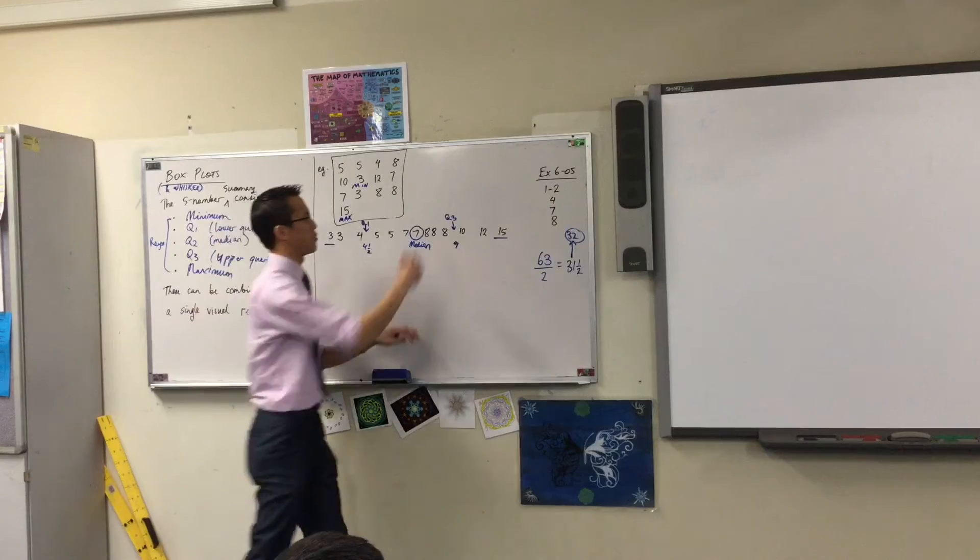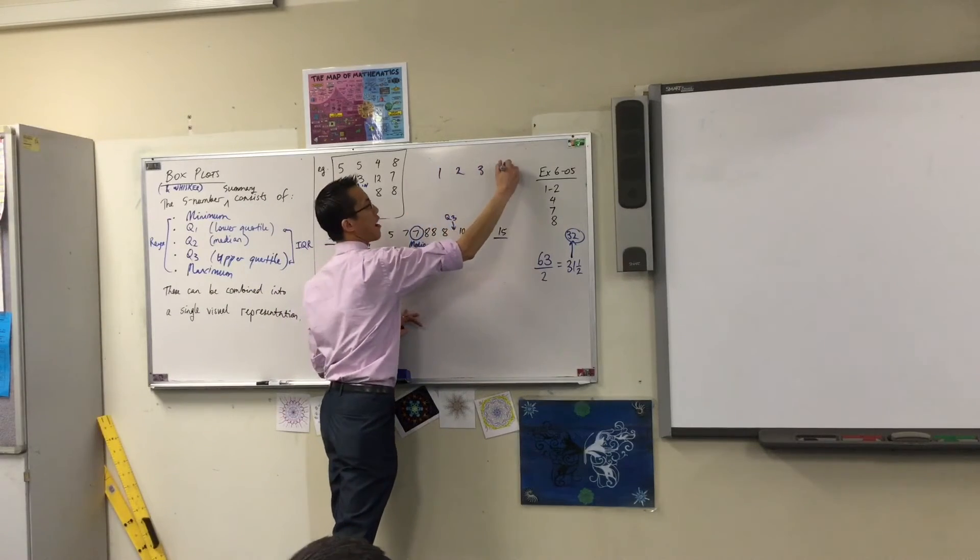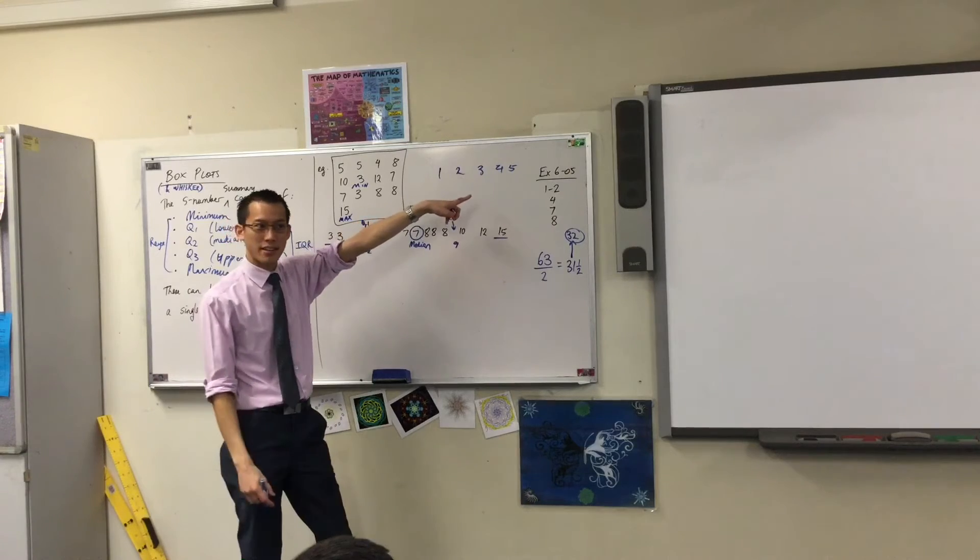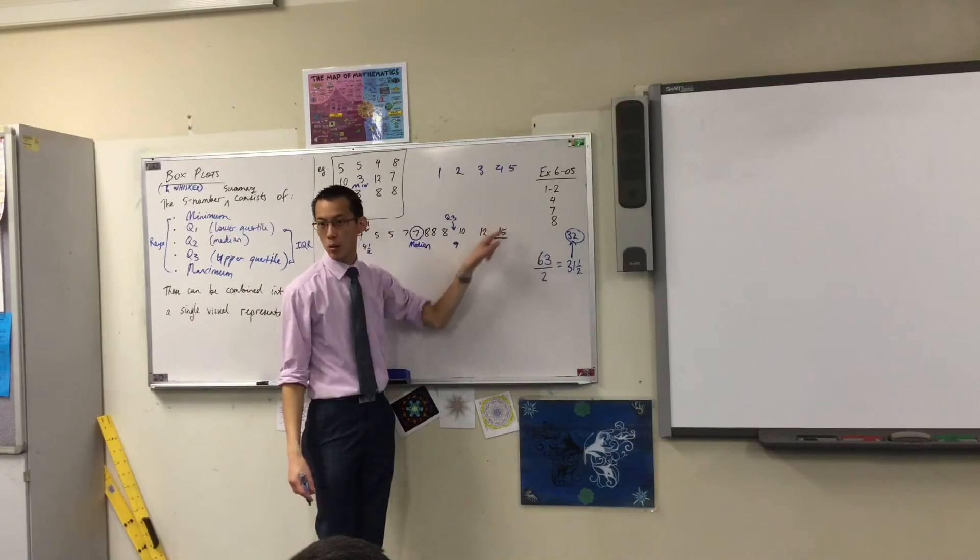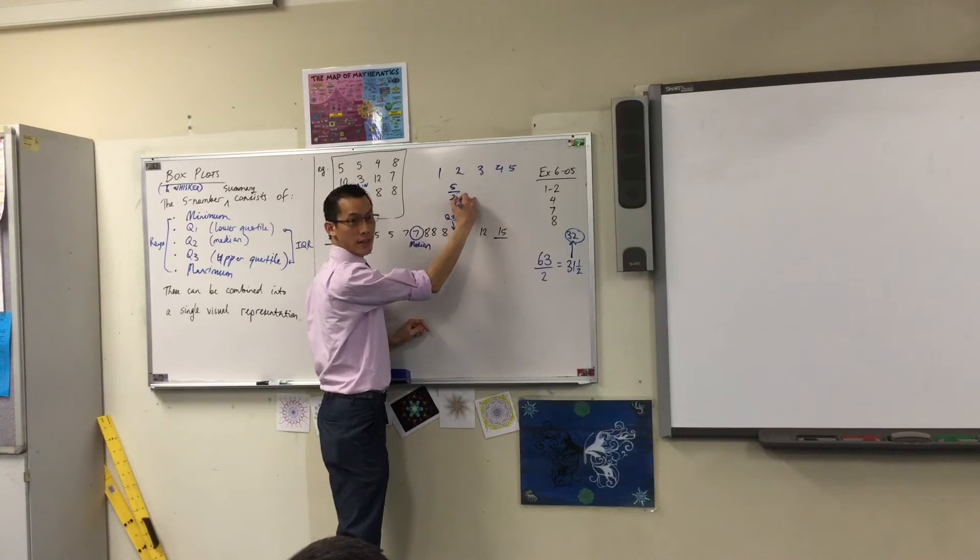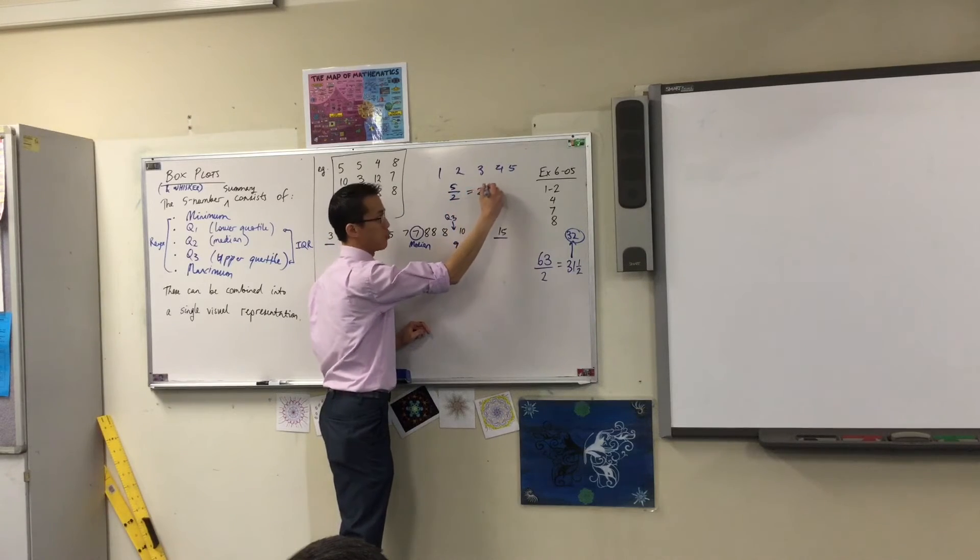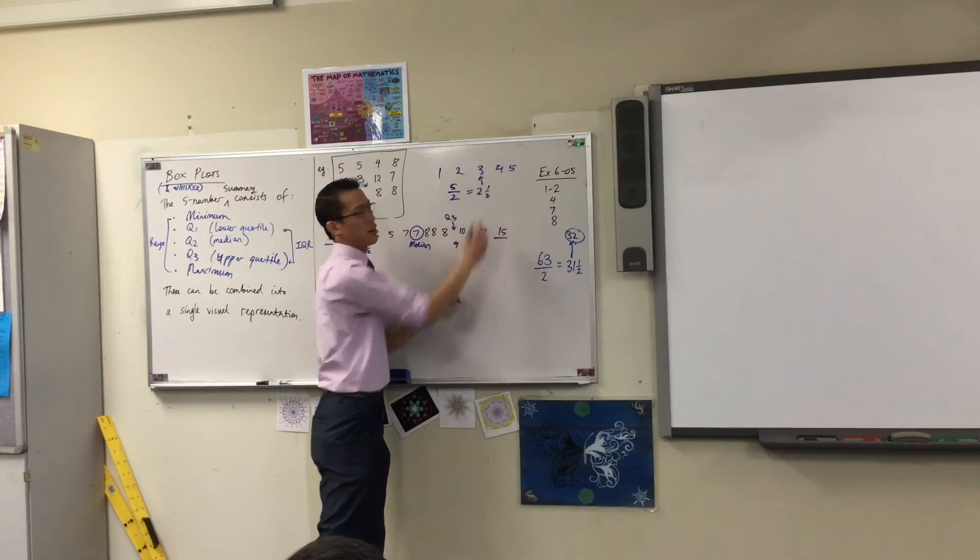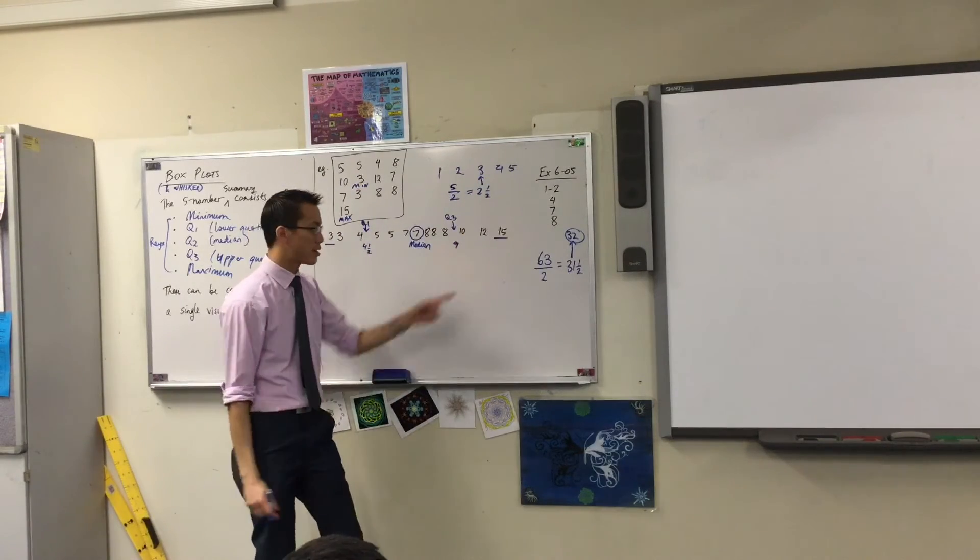If you have trouble remembering that that's the case, think back to a simple example. Think if you had five scores. You can immediately see which one is the median. But if you try this approach, what would happen? Five scores, you halve it. What does it give you? 2.5. And you know you're going to have to round up to get to the third one. Does that make sense?